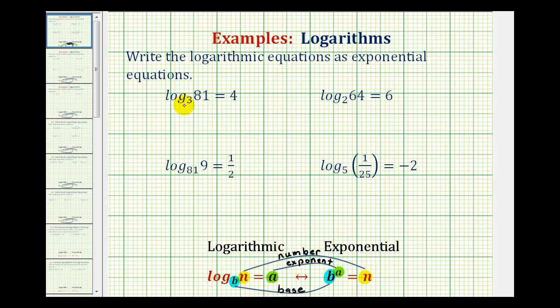So to write log base three of 81 equals four in exponential form, we need to recognize that three is the base. Since a logarithm is an exponent, four is the exponent. And this must equal the number, which is 81.